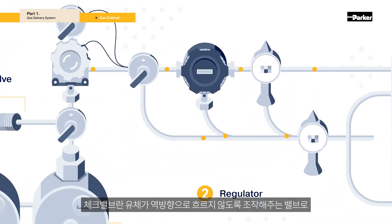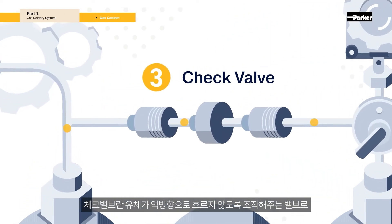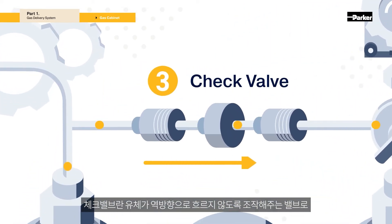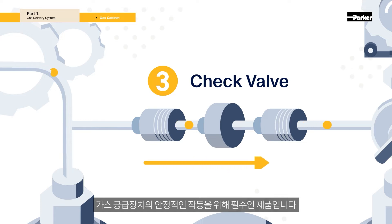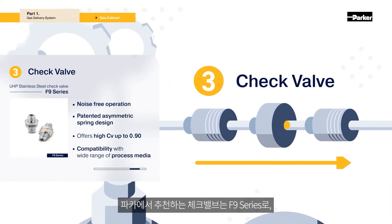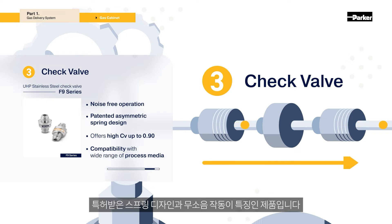The check valve is a valve that operates to prevent fluid from flowing in the opposite direction, and is essential for the stability of the gas delivery system. The check valve recommended by Parker is the F9 series, which features noise-free operation with a patented spring design.